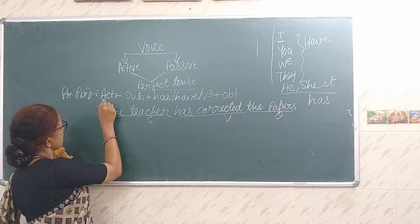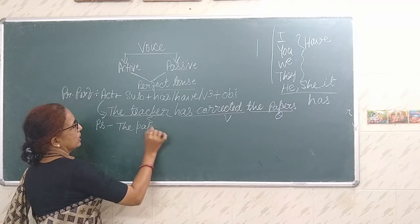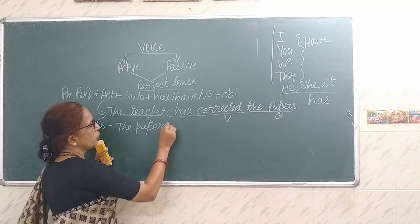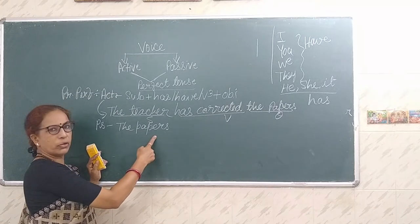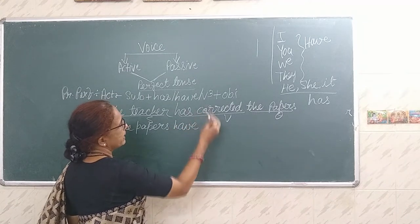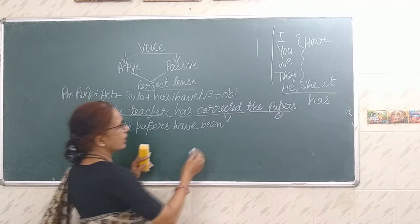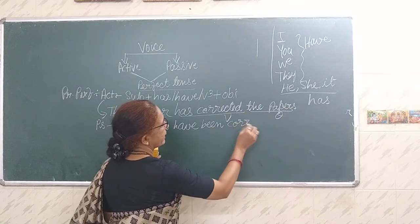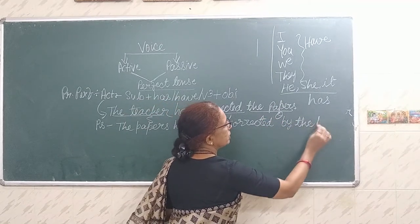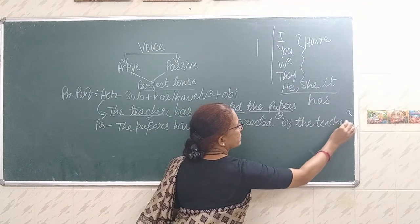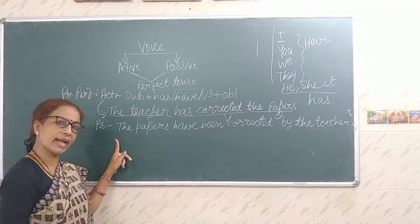Let us change it into passive. The passive becomes 'the papers'. Papers is plural; plural goes with 'have'. So even though it refers to 'it', because it is plural we use 'have'. 'The papers have been corrected by the teacher.' V3 is 'corrected'. By whom? By the teacher, because the teacher is the subject. This is present perfect tense active and passive sentence.